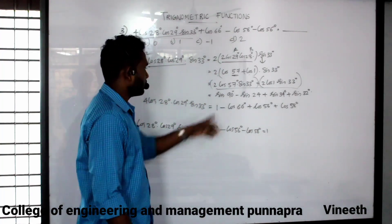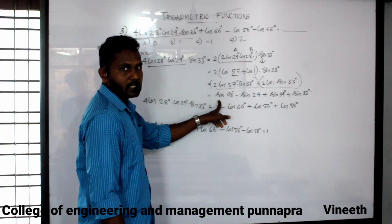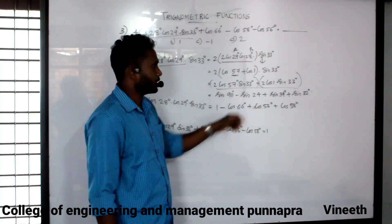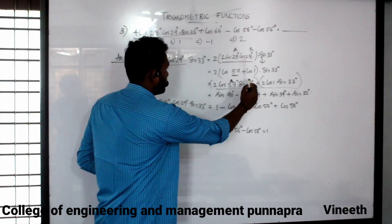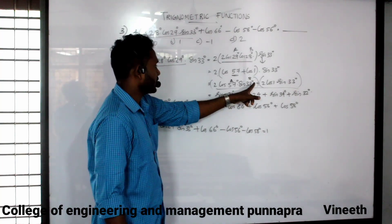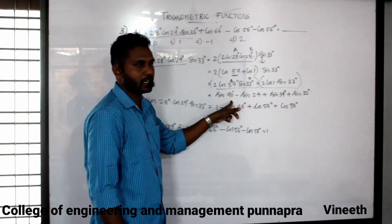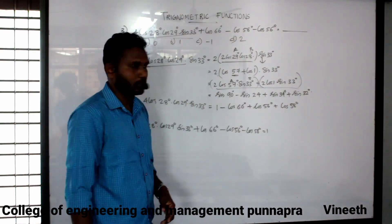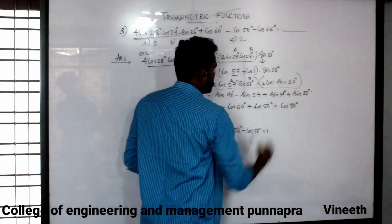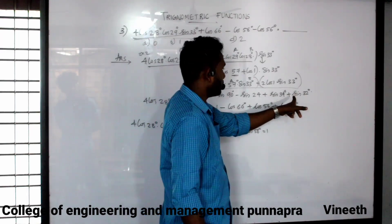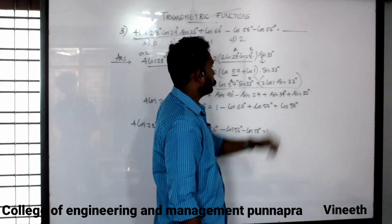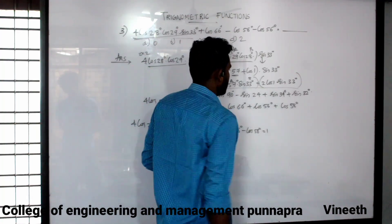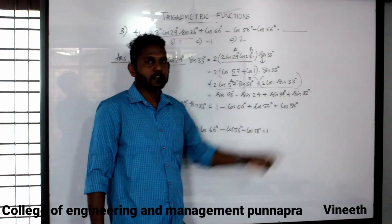2 cos A sin B equals sin(A plus B) minus sin(A minus B). With t3 plus 33 we get sin 90 minus t3 minus 33, then sin 24. The minus form becomes plus, giving sin 34 plus sin 32.